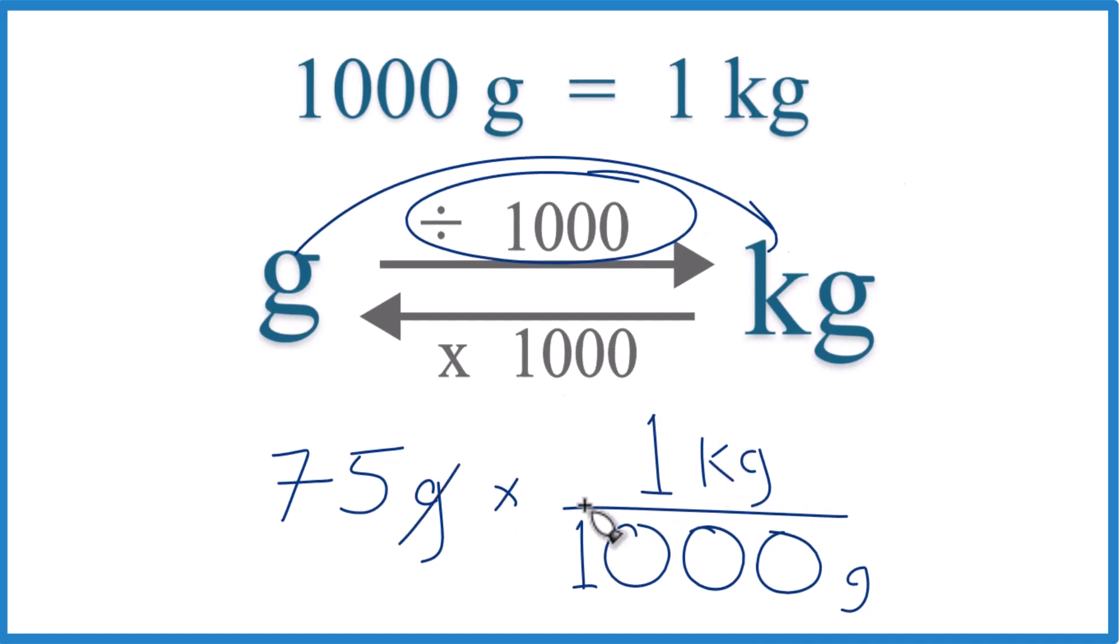Now, when you multiply grams on the top and the bottom, they cancel out, and you end up with 75 over 1,000. And that equals that 0.075 kilogram number we found earlier.